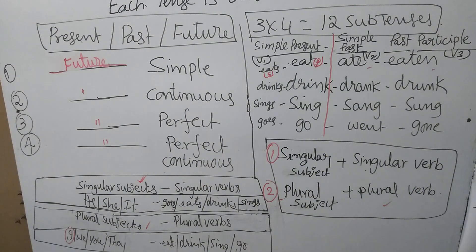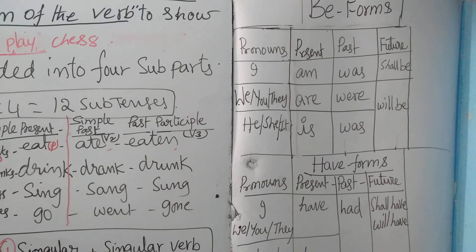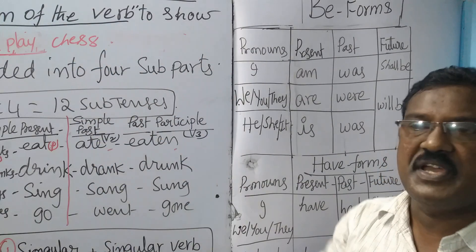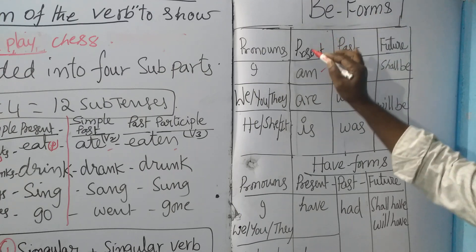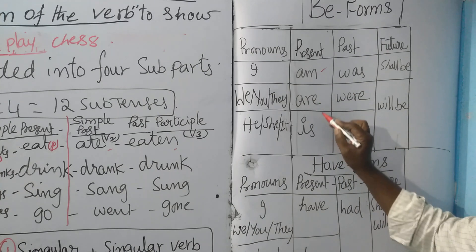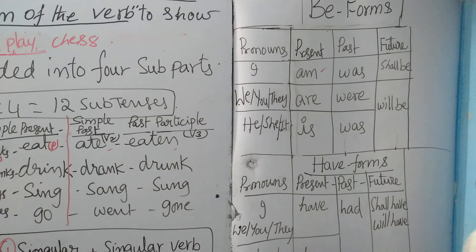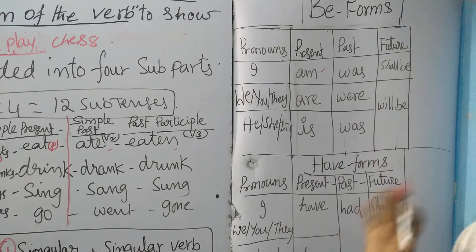Now, my dear students, if you want to write the four sub-tenses of each main tense, first of all we have to know the B forms. B forms are very, very important. Present tense B forms: am, is, are. Past tense: was, were. Future tense: shall be, will be. We understood the present, past, future B forms.